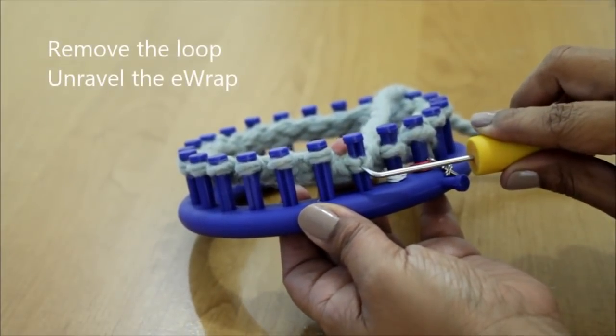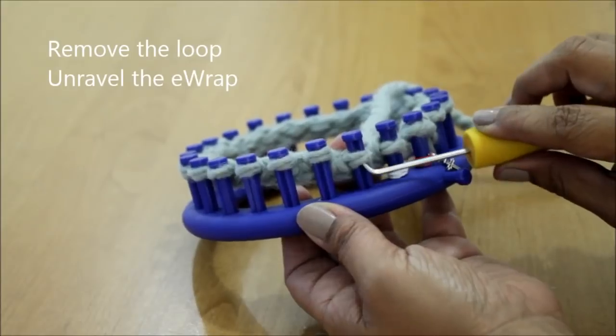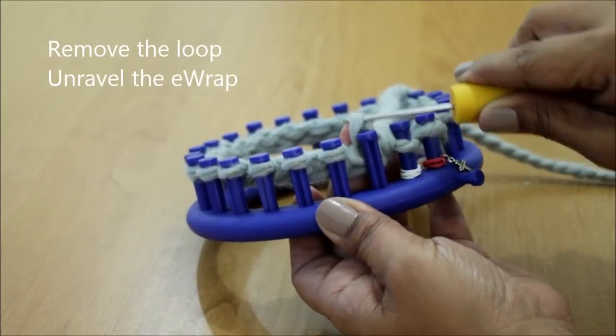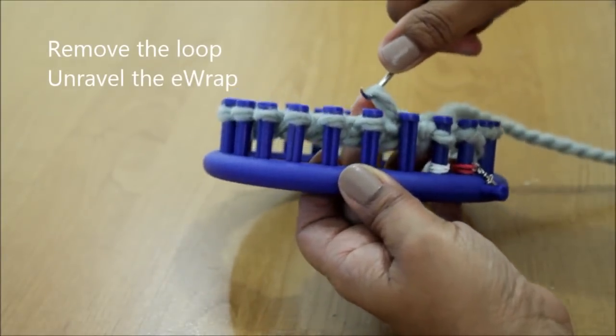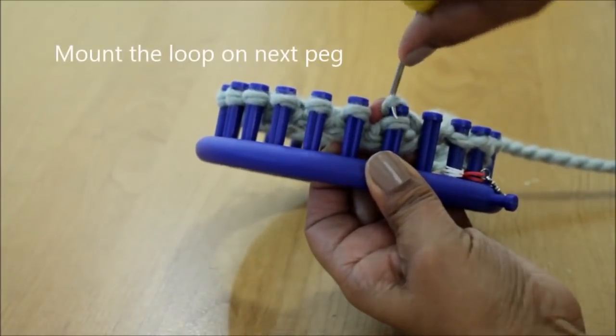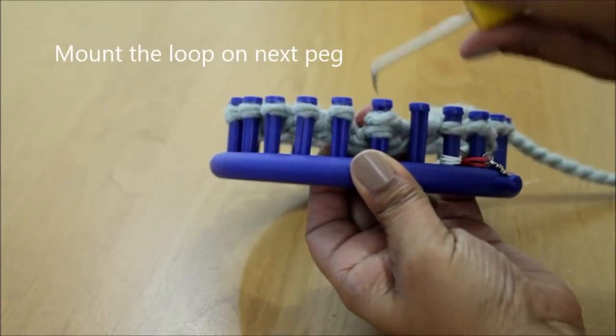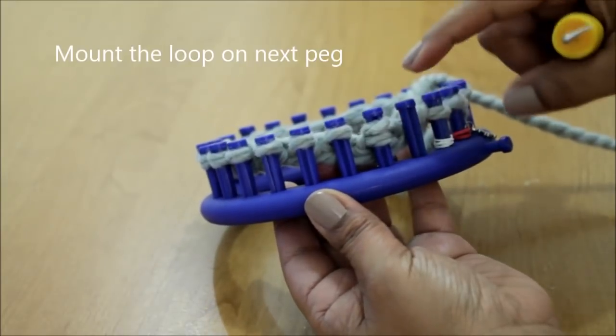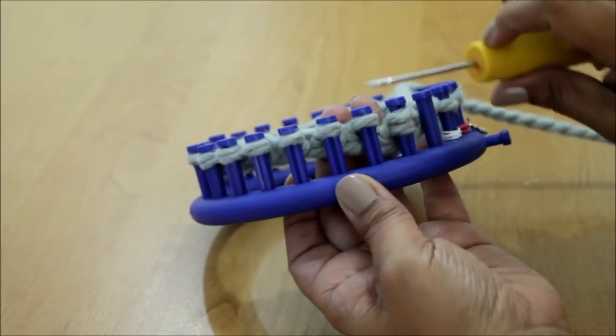Next is your yarn over and for that what you're going to do is remove the loop from the peg, unravel because it's an e-wrap and take that loop and put it on the next peg. And that's your yarn over, knit two together.